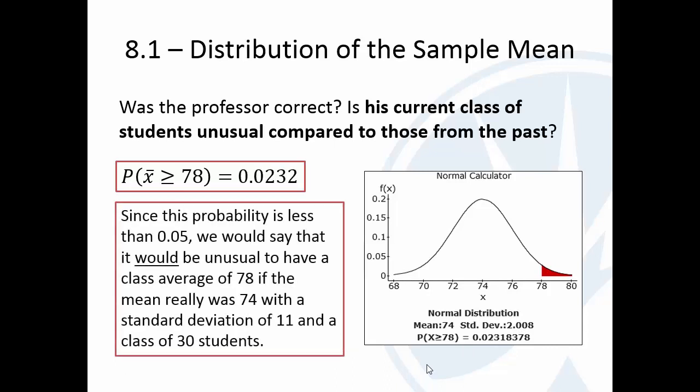So based on our cutoff of unusual, yeah, it would be unusual to have that class average of 78. So, since that would be unusual for that to happen randomly, it would be safe for this professor to say, yep, this is a pretty good group. This average is, the chances of getting this average or higher just randomly is about 2% of the time. 2% of the time you'll get a class average of this high or higher. Now, it could have just, by happenstance, students got lucky or something, and it just randomly happened to be that high. But, chances are, this is actually a better group than average.